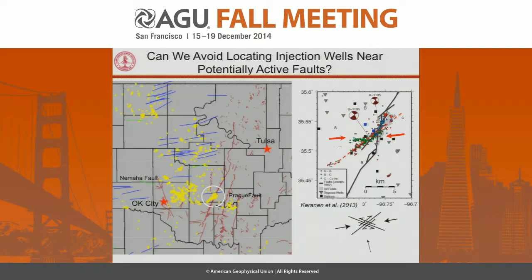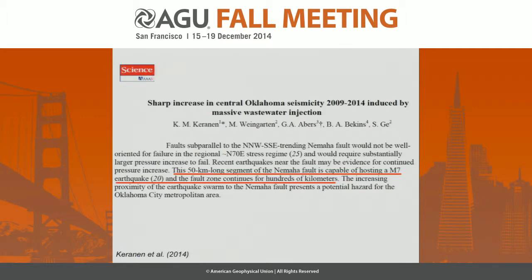The Prague fault, which produced a right-lateral strike-slip earthquake, is exactly what one would predict — it's about 30 degrees from the direction of maximum horizontal compression. In the January 2014 paper by Karan et al., which was a very nice paper with one exception, they speculated that the Nemaha fault could potentially be reactivated by fluid pressure changes. The Nemaha fault is a very big fault that essentially runs right along the edge of Oklahoma City, and a large earthquake on that fault would have very dire consequences.